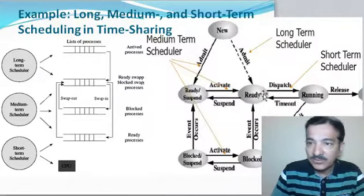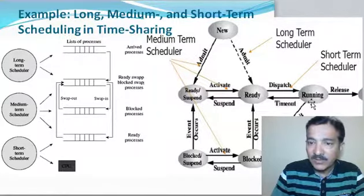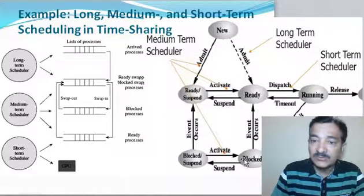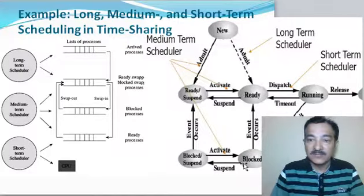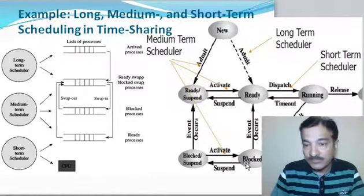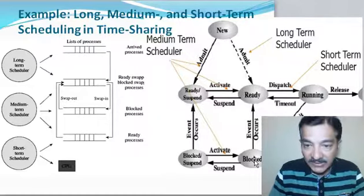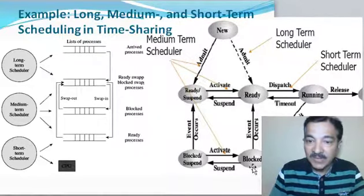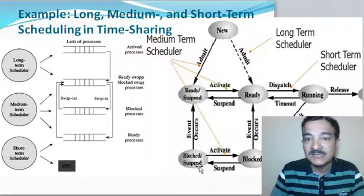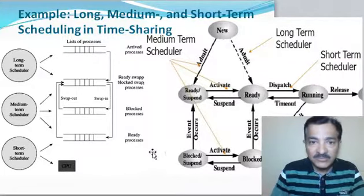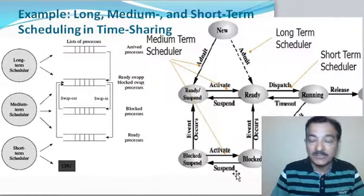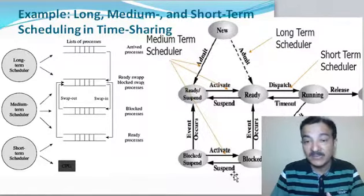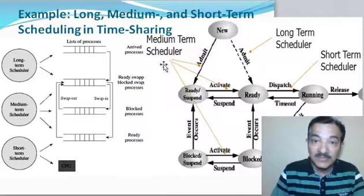Again, the short term scheduler will schedule some other process to the CPU. If the process has become blocked due to some IO wait, the process can be copied from the wait state to the secondary memory. That swapping to the secondary memory is done by the medium term scheduler, which copies the process from main memory to secondary memory and back again.